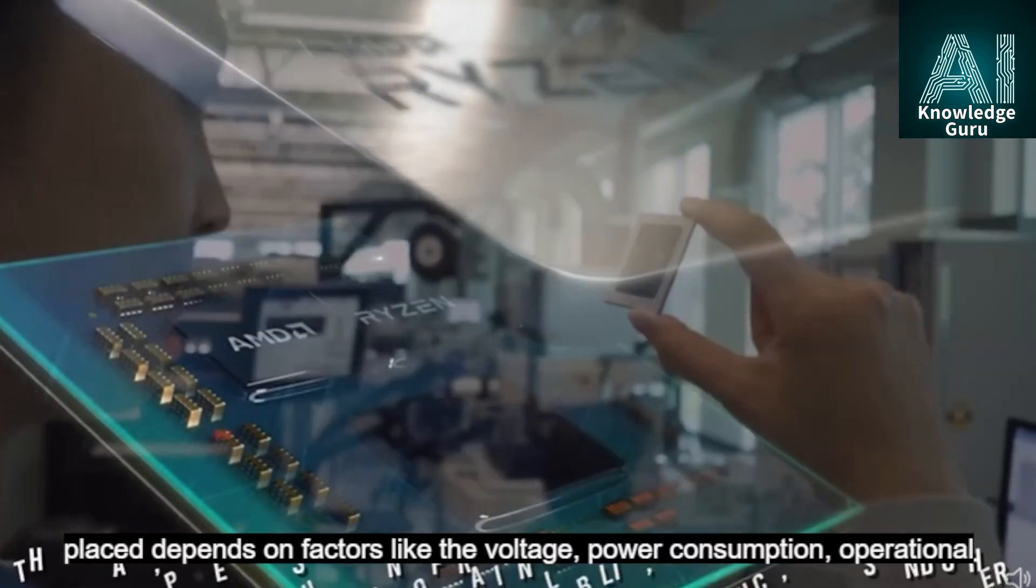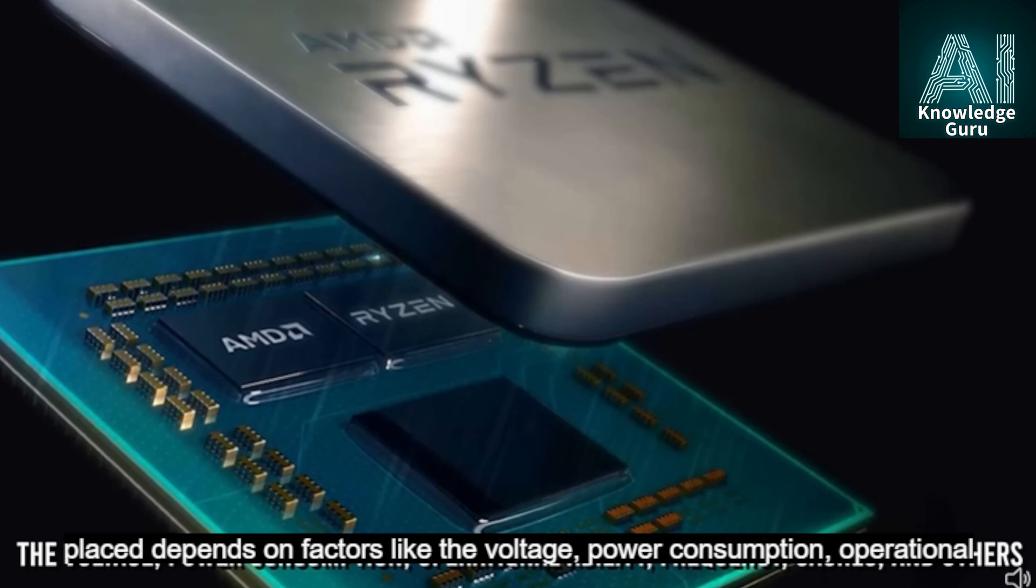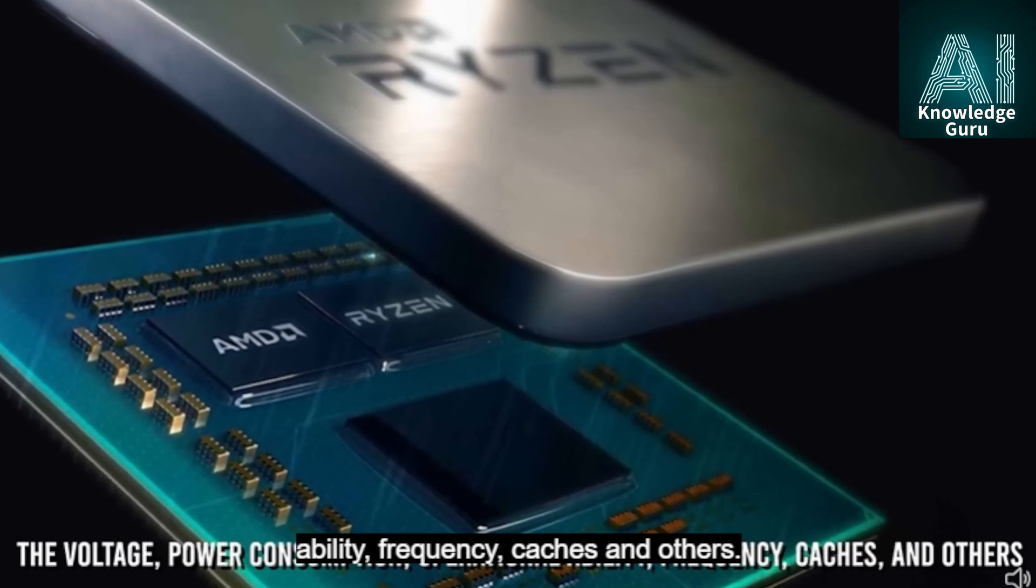The category into which the formed CPU has to be placed depends on factors like the voltage, power consumption, operational ability, frequency, caches and others.